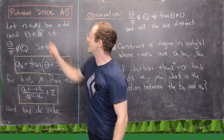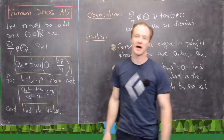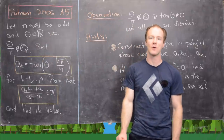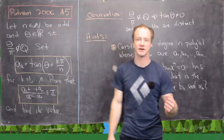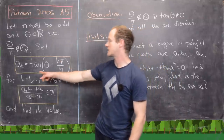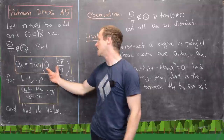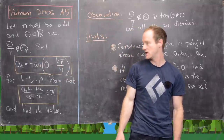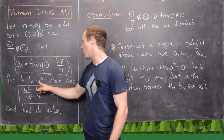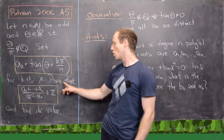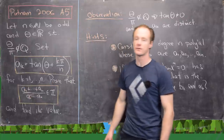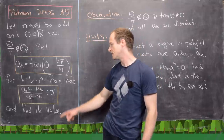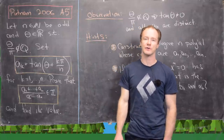We want to let N be some natural number that is odd, and θ is a real number such that θ/π is irrational. We set A_k equal to the tangent evaluated at θ plus k times π over N, for k from 1 to N. Our goal is to prove that the sum of A_1 through A_N divided by the product of A_1 through A_N is an integer, and then find the value of that integer.